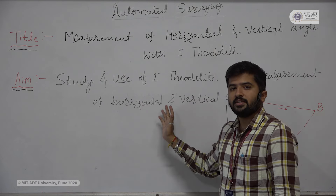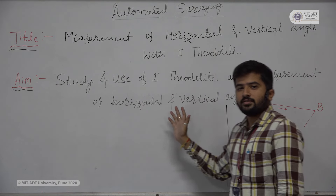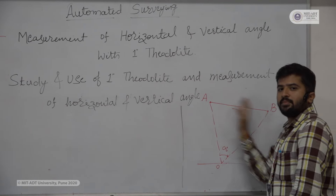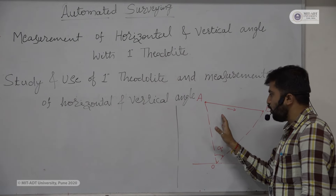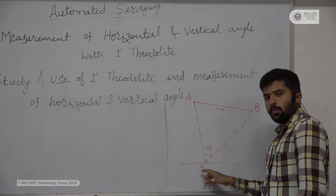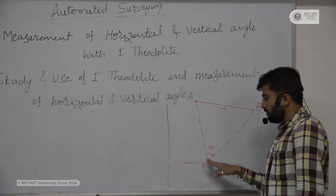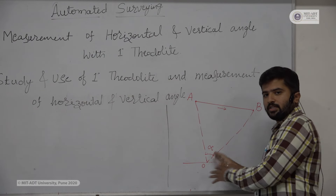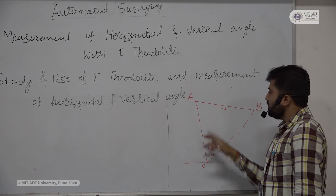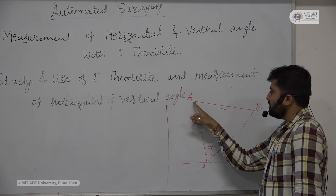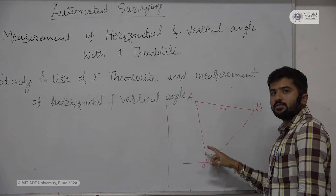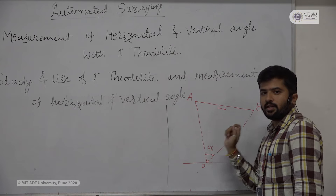What is horizontal angle measurement? As you can see in the figure, A and B are the two points where the station point is considered as O. Our instrument is going to stand with the help of a tripod. Here we are going to find the angle between A and B, that is your horizontal angle.